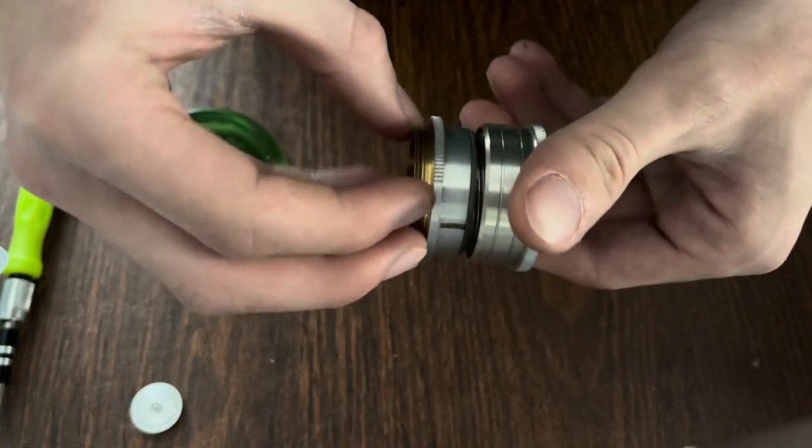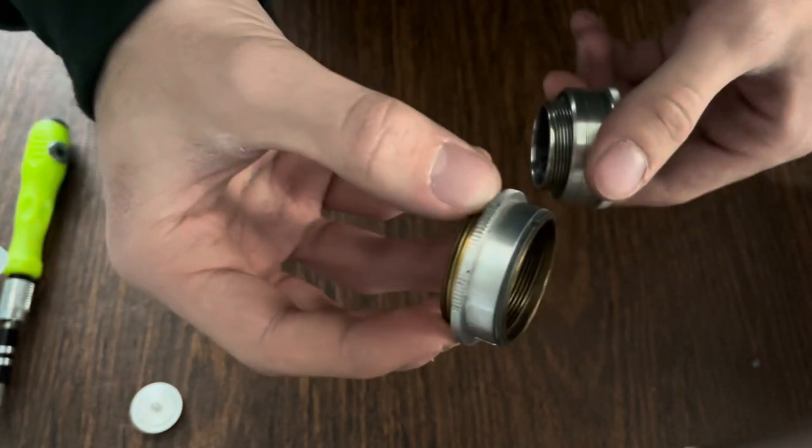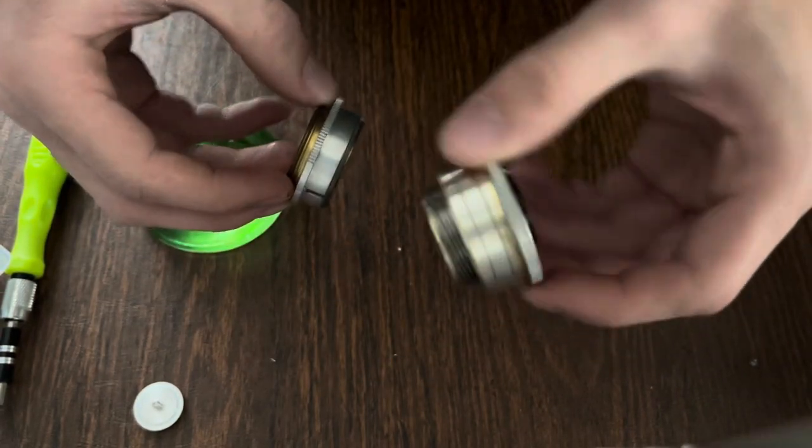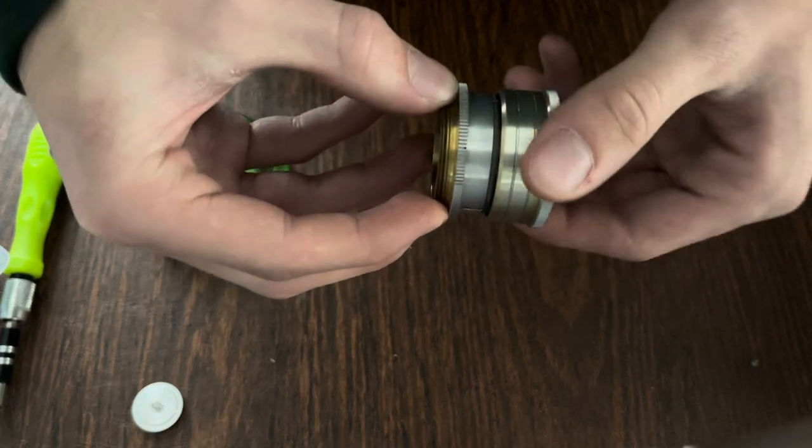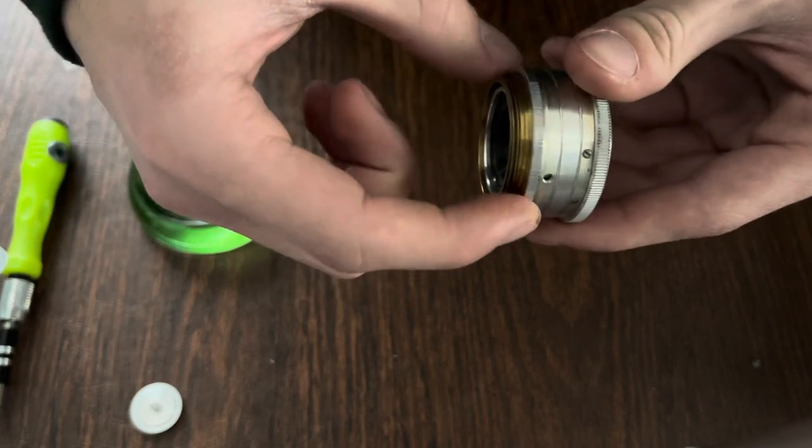Then take the two, holding it by the brass part and the focusing ring, and screw them together. You'll notice that this is loose while the rest of it does not rotate.